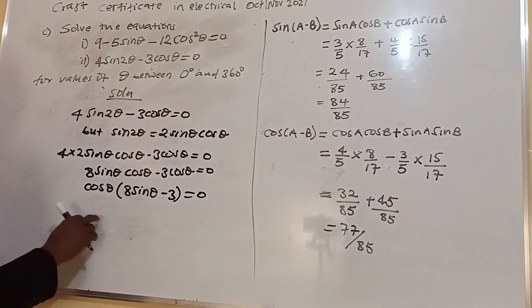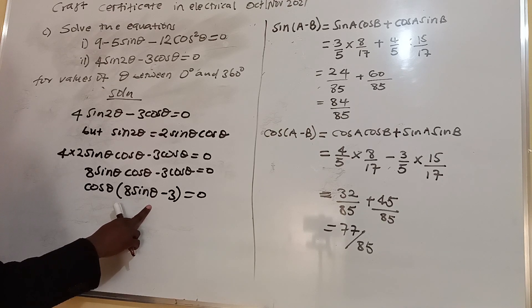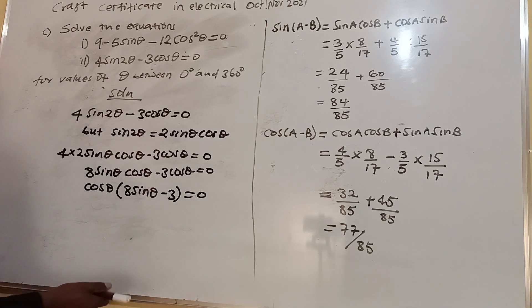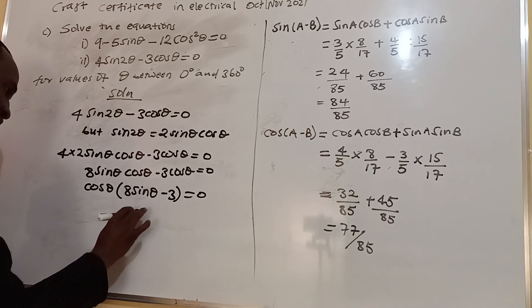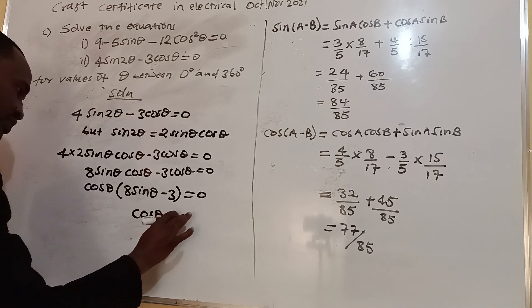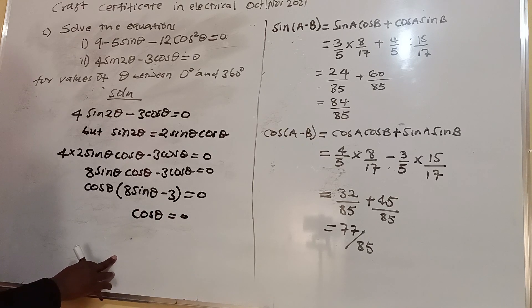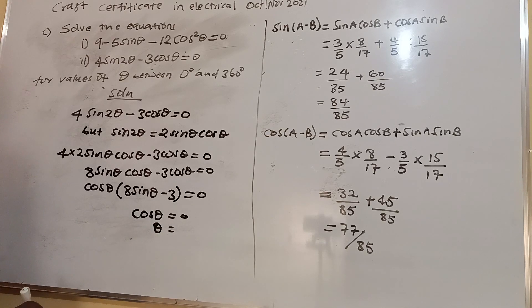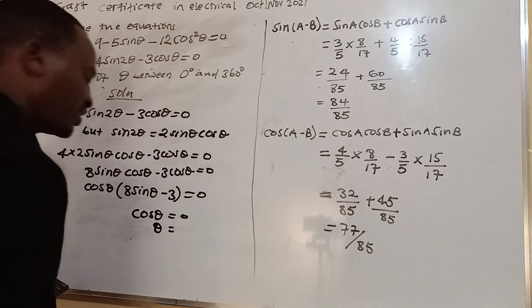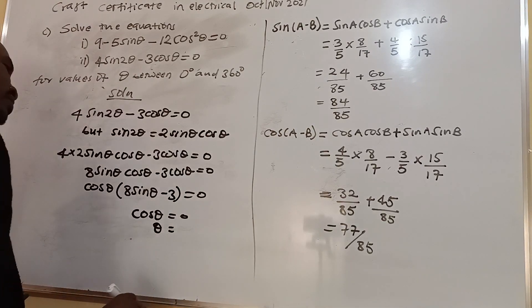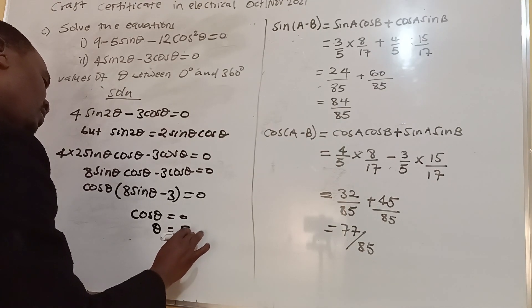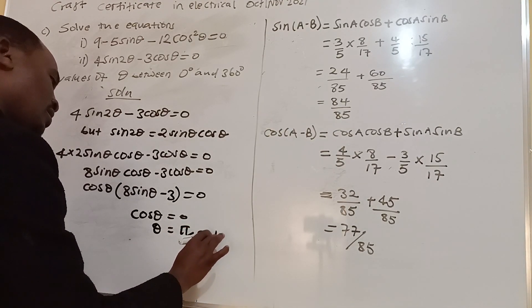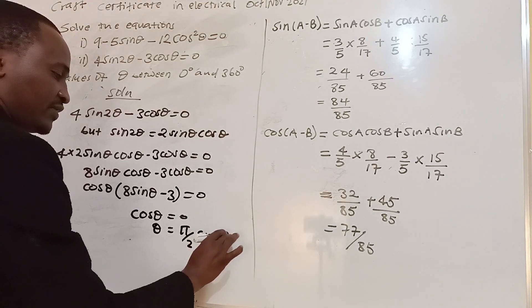Substituting, we have 4 times 2 sin θ cos θ minus 3 cos θ equals 0, which gives 8 sin θ cos θ minus 3 cos θ equals 0. Factoring out cos θ: cos θ(8 sin θ minus 3) equals 0. So either cos θ equals 0 or 8 sin θ minus 3 equals 0. Taking cos θ equals 0, theta equals 90 degrees and 270 degrees.